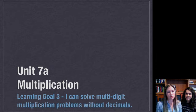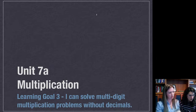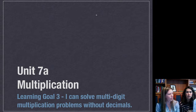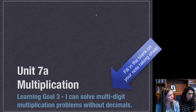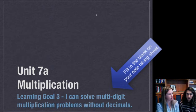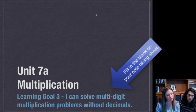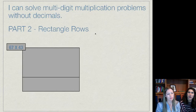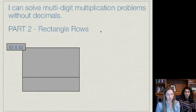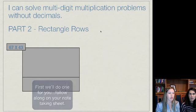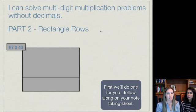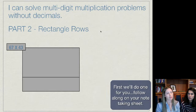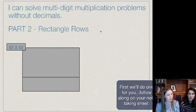All right, now for a second method. You are going to use your note-taking sheet and this is under part two. So you're still solving multi-digit multiplication problems without decimals but we're going to show you a new method and some of you might prefer this one better than the first one. Just follow along on your note-taking sheet and see exactly how to do it.